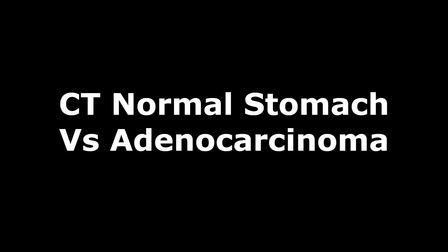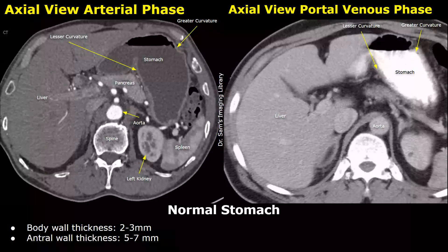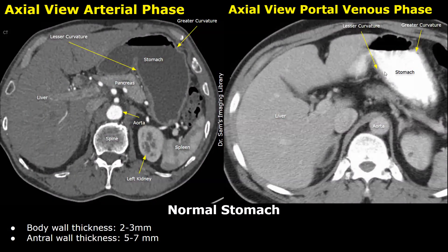Hello everyone, this is Dr. Sam and today we will learn about the CT imaging of gastric adenocarcinoma. First, we will look at the normal stomach CT appearances. These are axial views. On the left, we have the stomach appearing well distended with water, displaying a smooth inner surface.